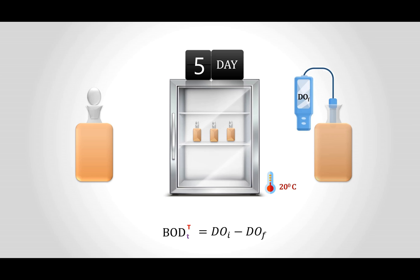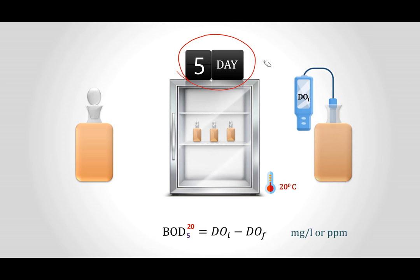There are two T's: small 't' represents time in days (e.g., five days) and capital 'T' represents the temperature at which the test is performed. So BOD is represented as BOD₅ at 20°C. The unit of BOD is mg/L — how much oxygen is demanded per liter of water — or it can also be expressed in ppm.